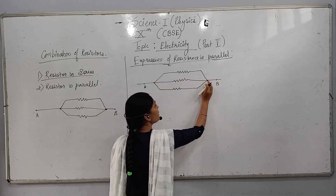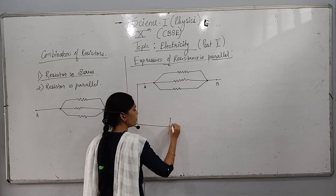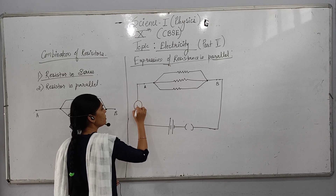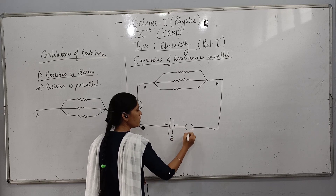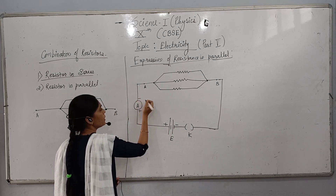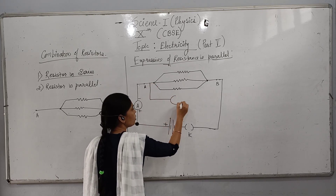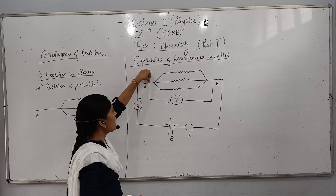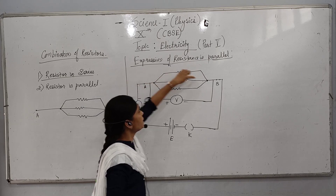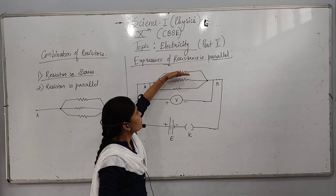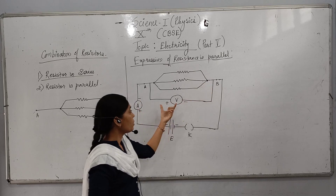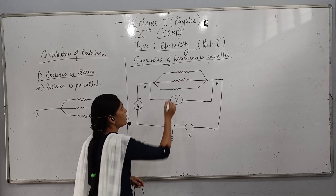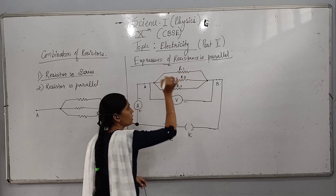Here we have a joint wire connected to a battery and key, along with an ammeter in series. This is the positive terminal, negative terminal, E, K (switch). So here the potential drop will be the same between point A and B, because these resistors R1, R2, R3 are connected in parallel.